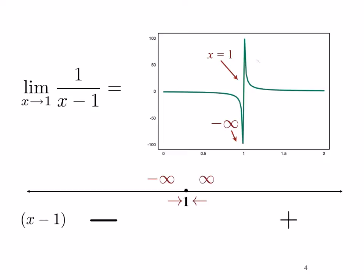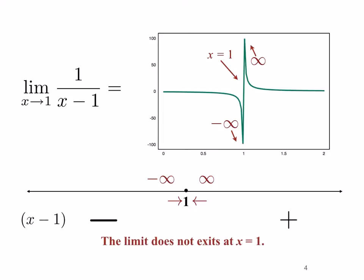Similarly, as we approach one from the right, x minus one is always a little positive as it approaches zero, so one divided by something going to zero positive gives positive infinity. So the limit from the left is negative infinity and the limit from the right is positive infinity. This means the limit does not exist at x equals one, certainly because there are different limits from the left and the right.